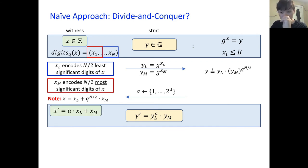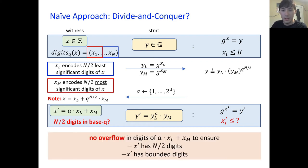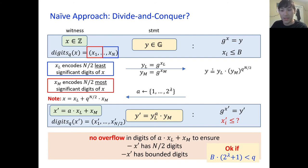The big question is: does X prime have n over 2 digits in base Q? And are these digits small, and is X prime a witness to Y prime? X prime is indeed a witness to Y prime. As long as there's no overflow in the digits of lambda times X_L plus X_M, we can ensure that X prime has n over 2 digits and that X prime has bounded digits. When can we ensure no overflow happens? As long as Q is sufficiently large, then X prime has n over 2 digits and each of them are bounded sufficiently.